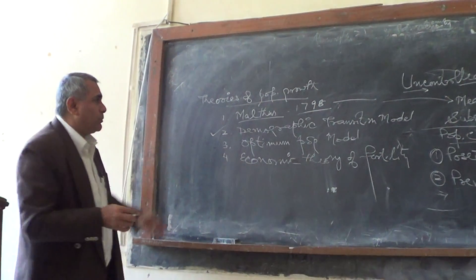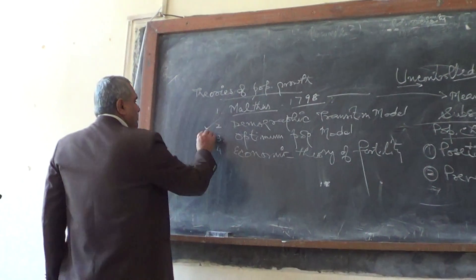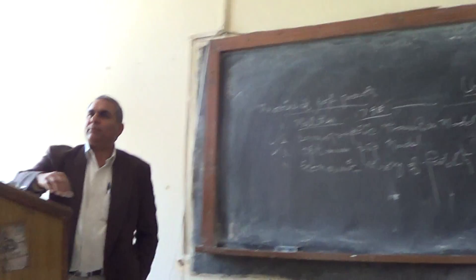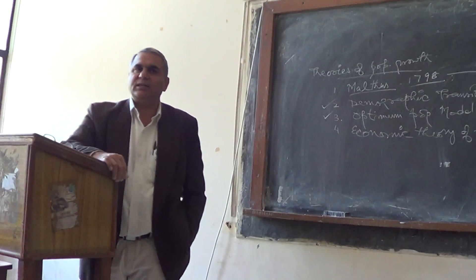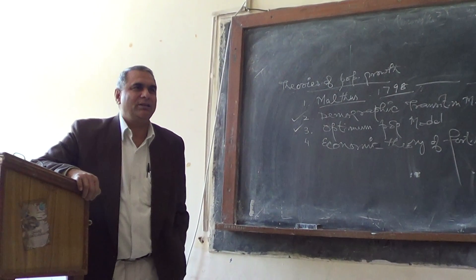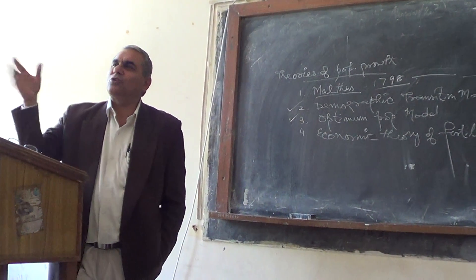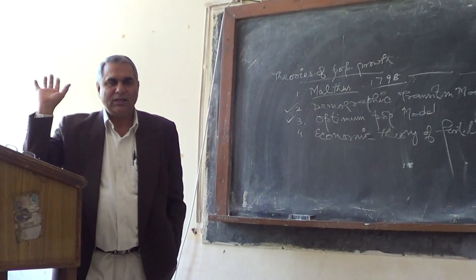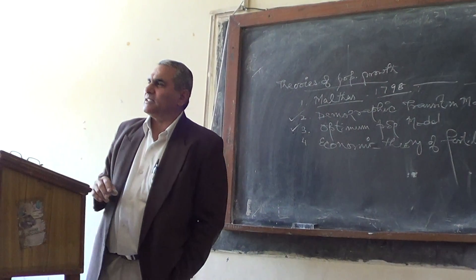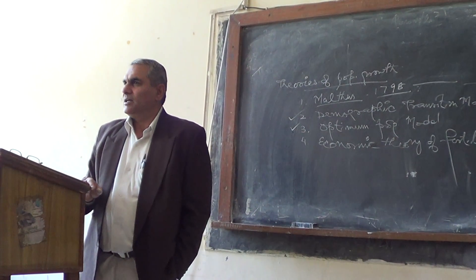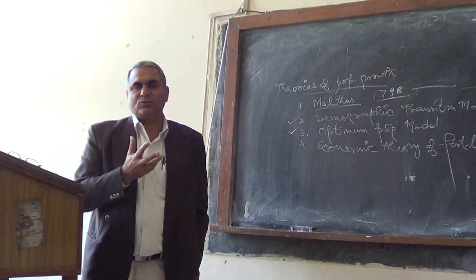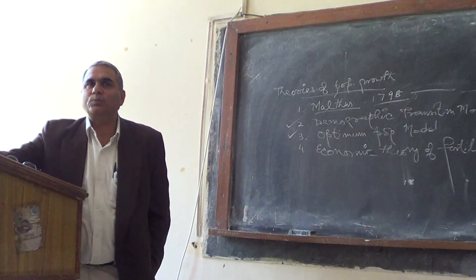Then there is the Optimum Population Model. Optimum population is a kind of utopian concept — it is a concept which can never be achieved in reality.